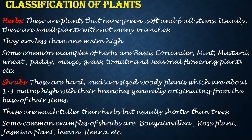Shrubs. These are hard, medium-sized woody plants which are about one to three meters high, with their branches generally originating from the base of their stems. These are much taller than the herbs but usually shorter than the trees. Some common examples of shrubs are bougainvillea, rose plant, jasmine plant, lemon, henna, etc.